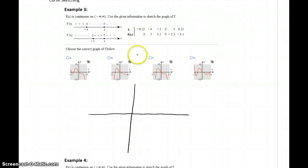But again, we can start by plotting the different points that we're given. So negative 6.25, our function value is 0. At negative 4, our function value is going to be 5. At negative 2, we get a function value of 3.1. At 0, 0. At 4, negative 2.3. And at 6.25, we have a function value of negative 3.1.